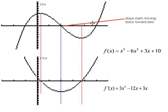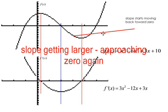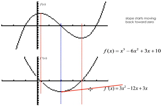Then after the point of inflection, the slope begins increasing back towards zero. So down here, this section, we're approaching zero.